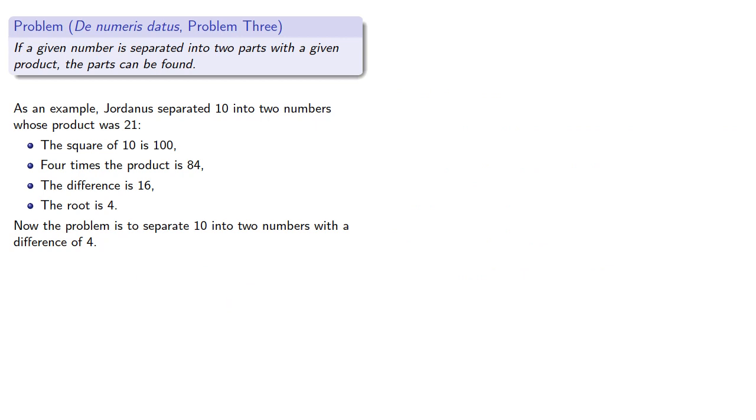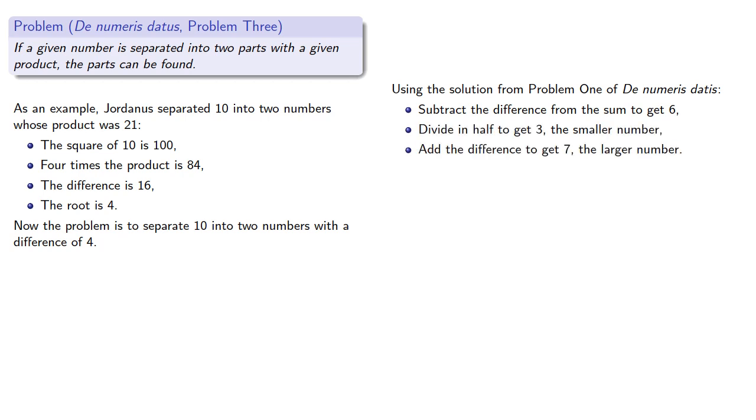But that was actually the first problem in De Numeris Datis: a given number is separated into two numbers with a given difference. Using the solution from Problem 1: subtract the difference from the sum to get 6, divide in half to get 3, the smaller number. Add the difference to get 7, the larger number. So the solution to our original problem is 3 and 7.